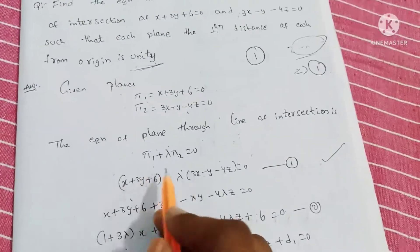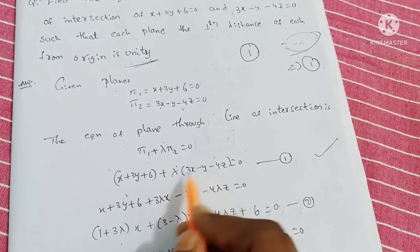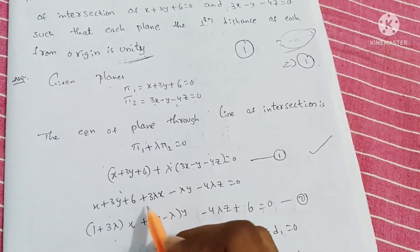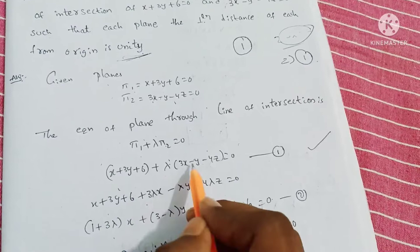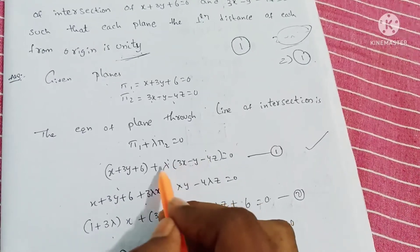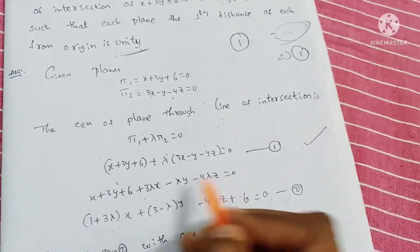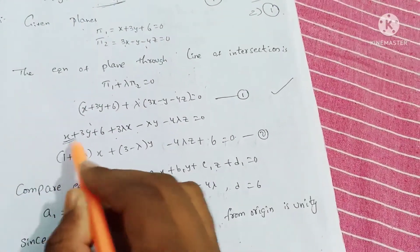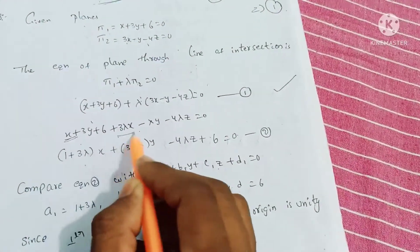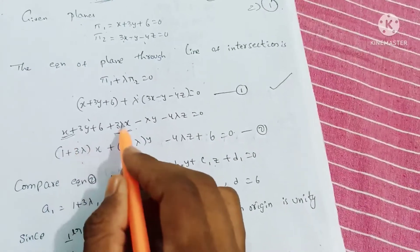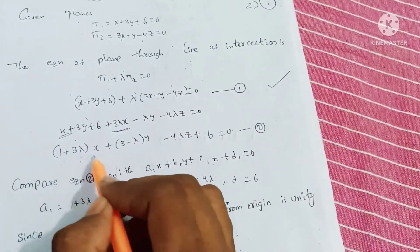Multiplying lambda into Plane 2: 3 lambda x minus lambda y minus 4 lambda z is equal to 0. Now collecting the x terms: 1 plus 3 lambda into x.